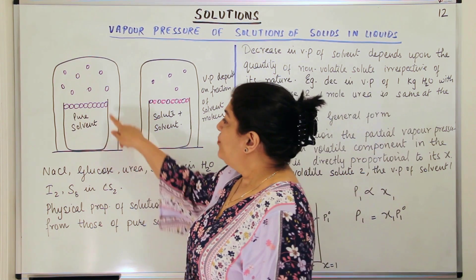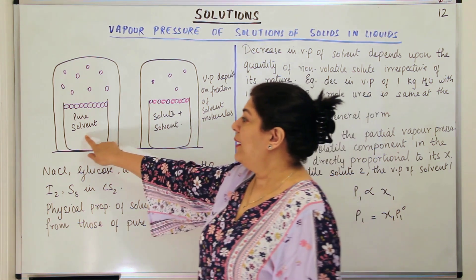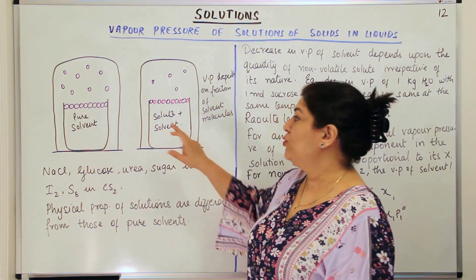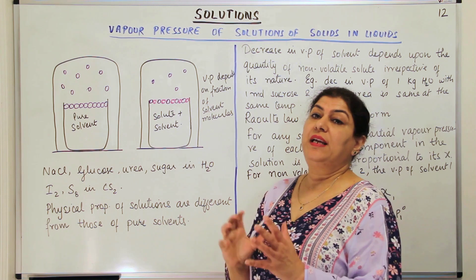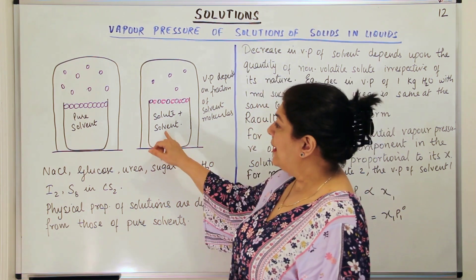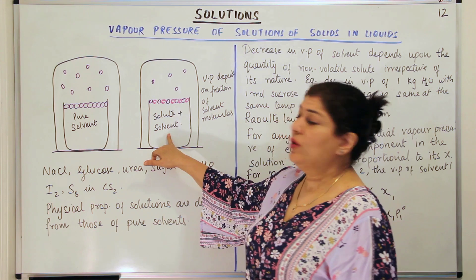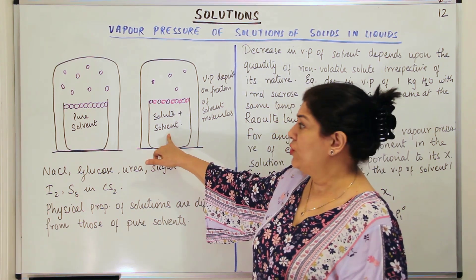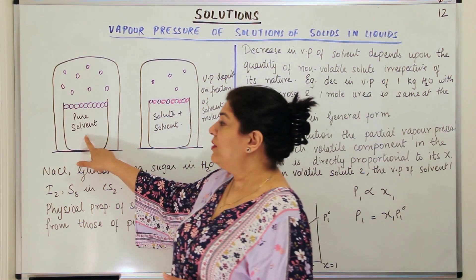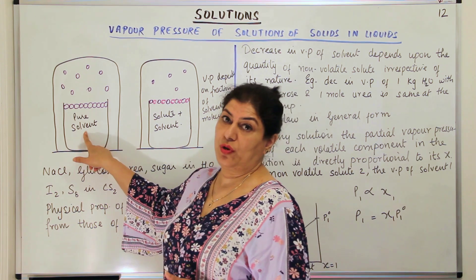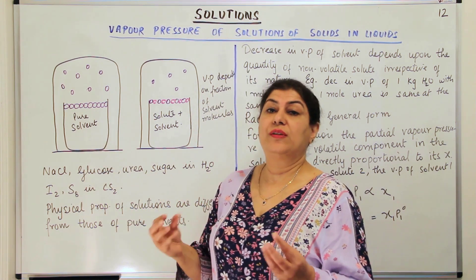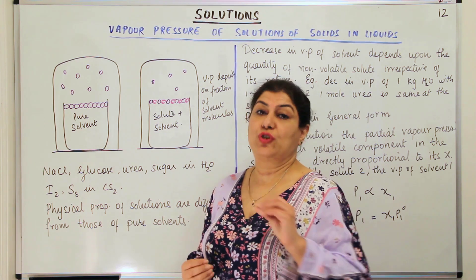These are two beakers. In beaker 1 we have pure solvent, and in beaker 2 we have an equimolar solution of solvent and solute — that is, one mole of solvent and one mole of solute. It's an equimolar solution, and here we have the pure solvent. What happens as a result of the addition of solute?